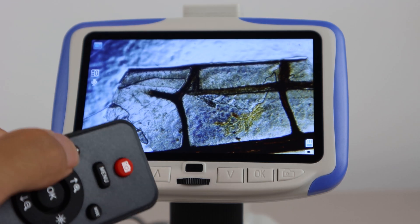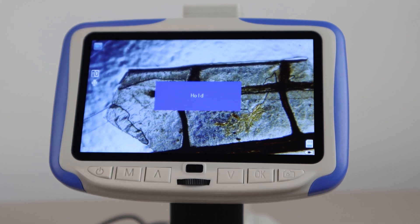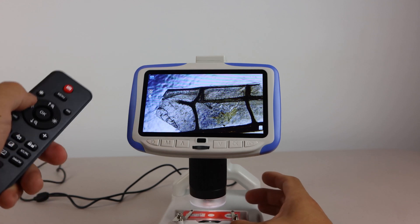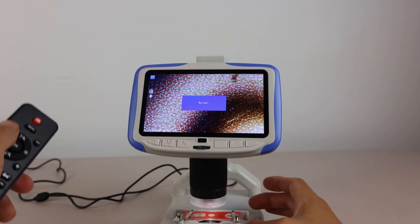When viewing a sample, if you hit the freeze button on the remote, then the image on the screen will not change, even if you move the sample around, unless you unfreeze the camera feed.